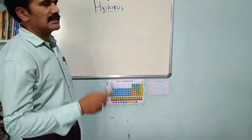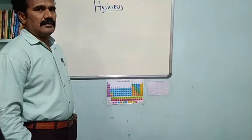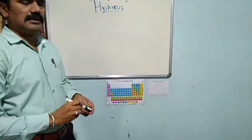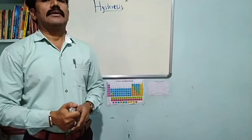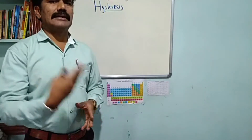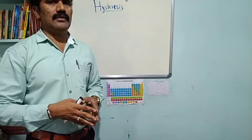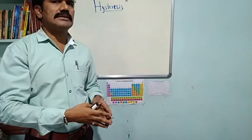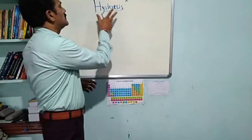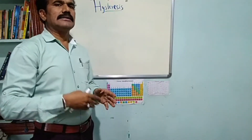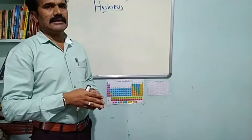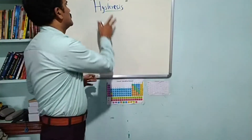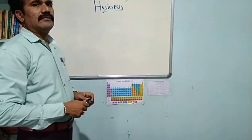Today I will explain the concept of hysteresis. Hysteresis is the property observed in a ferromagnetic material. When a ferromagnetic material is magnetized by the application of an external magnetic field, the process of how magnetization takes place step by step and how it is demagnetized later is included in the concept of hysteresis. The word hysteresis is used because the ferromagnetic material behaves based on its previous history of total magnetization.